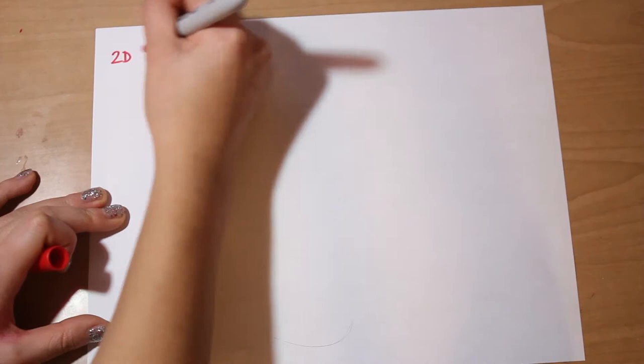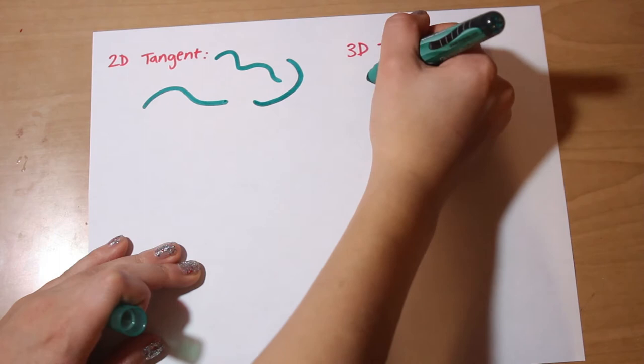Just like with tangent lines, finding a tangent plane in 3D has its rules. For a tangent line to exist, a curve has to be smooth. Similarly, for a tangent plane to exist at a point, the surface of a 3D object has to be smooth.